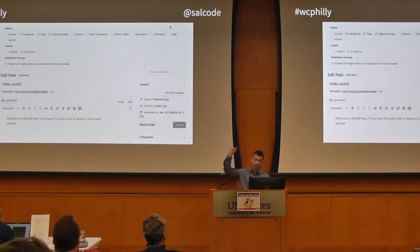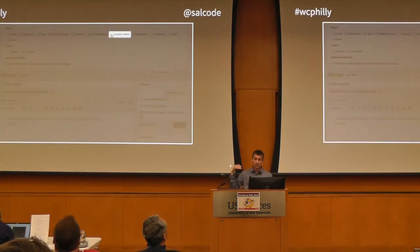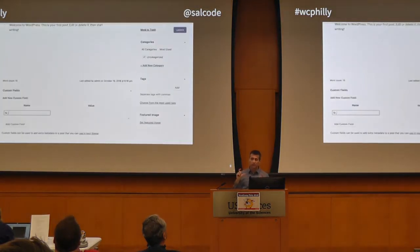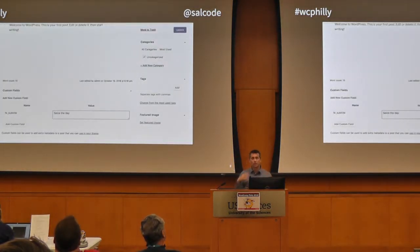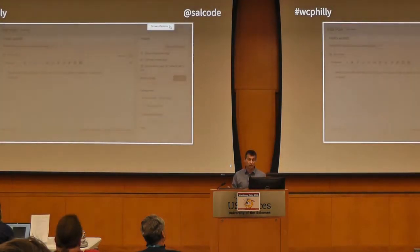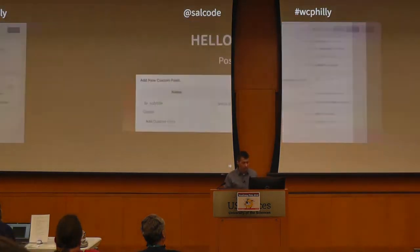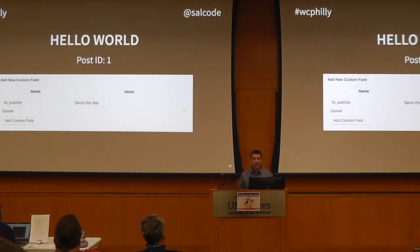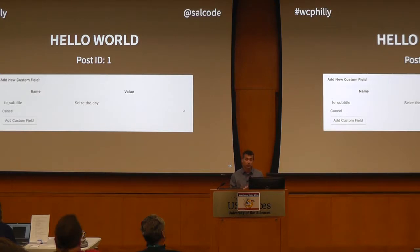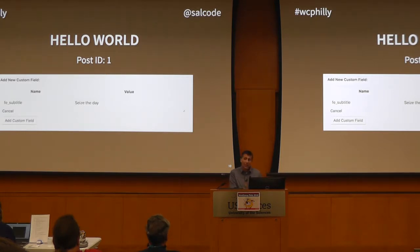If you scroll up to the top, there's a Screen Options dropdown. You click it, and in there you get a bunch of checkboxes. When you check Custom Fields, now you get this new custom fields box down at the bottom of your post where you can add information. I'm on my Hello World post — my first post — and in here I've got 'Add New Custom Field.' It's got room for me to add things. I'm going to add a name and a value.